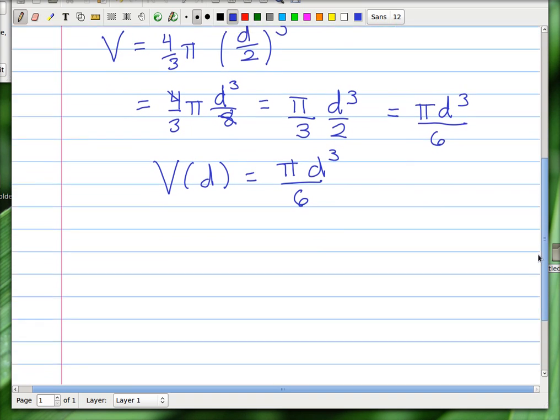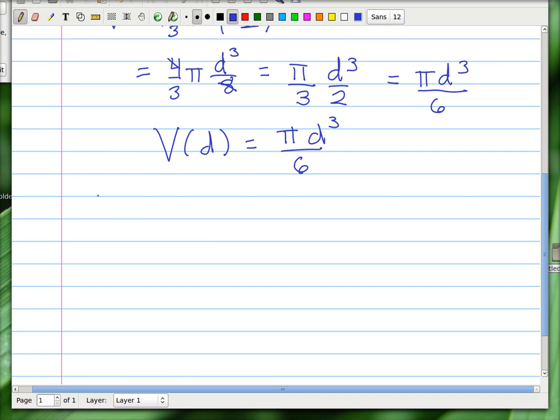And to finish up, all we have to do is find V prime of d. And if you try to do the Leibniz notation, you'll get dV over dd, which looks terrible, which is why I'm doing it this way. Alright, so how do you take the derivative? What happens?